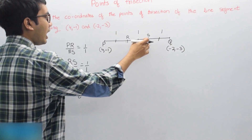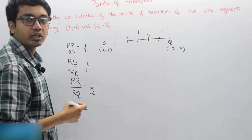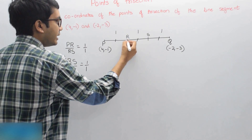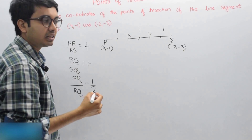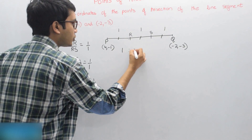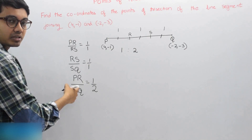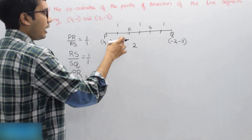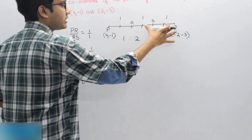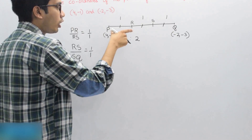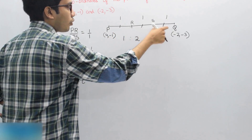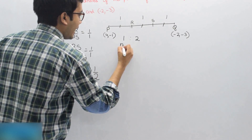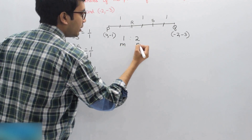I want the coordinates of R and S. We have learnt about the internal division of a line segment. Now R is dividing P and Q internally in the ratio 1:2, because PR by RQ is equal to 1 by 2 — this is one part and RQ is two parts. So here M will be 1 and N will be 2.